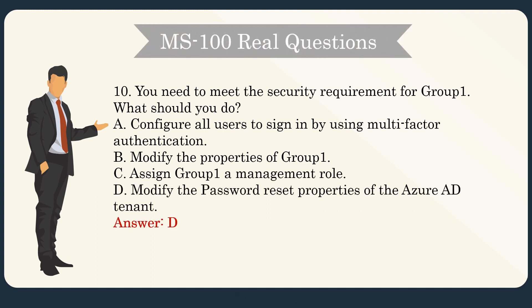Question 10. You need to meet the security requirement for Group 1. What should you do? A. Configure all users to sign in by using multi-factor authentication. B. Modify the properties of Group 1. C. Assign Group 1 a management role. D. Modify the password reset properties of the Azure AD tenant. Answer: D.